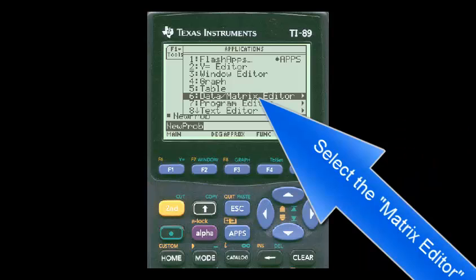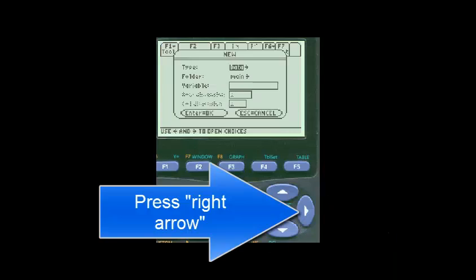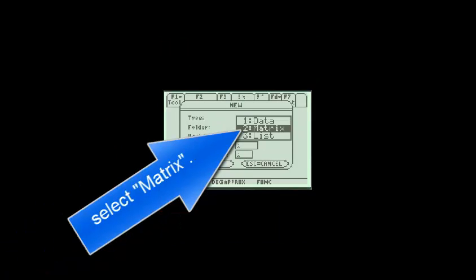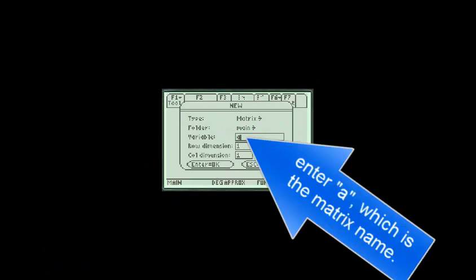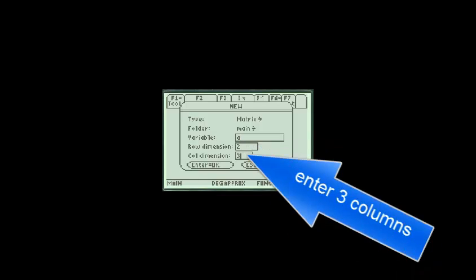Select matrix editor. Select a new matrix. Press the right arrow. Press the right arrow, which will expand the data options. Select matrix. Enter A, which is the matrix name. We want two rows and three columns.